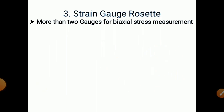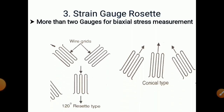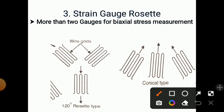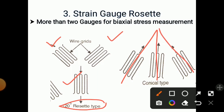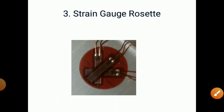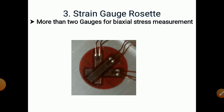The third type is the strain gauge rosette. More than two gauges are used for biaxial stress measurement. If we want to measure biaxial stresses, we use two or more strain gauges. Here a 120-degree rosette type is shown where three strain gauges are used at 120-degree angles. You can also use conical type strain gauges for measurement of biaxial stresses.